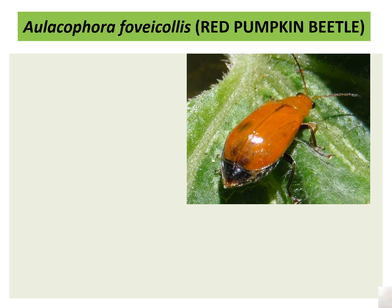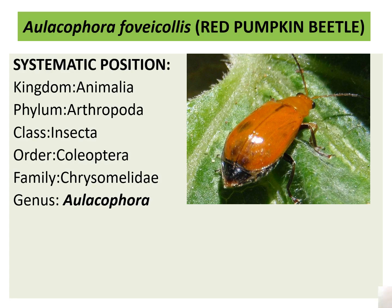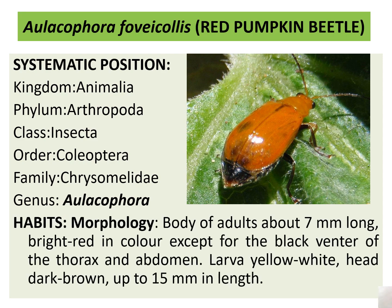Aulacophora foveicollis is also known as the red pumpkin beetle. Its systematic position includes kingdom Animalia, phylum Arthropoda, class Insecta, order Coleoptera, family Chrysomelidae, genus Aulacophora.